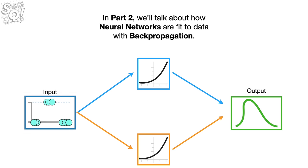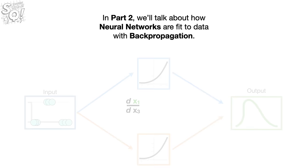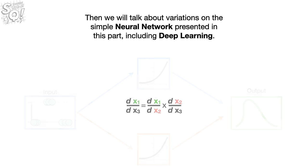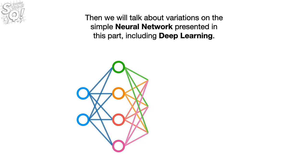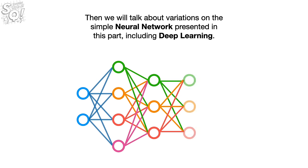In Part 2, we'll talk about how neural networks are fit to data with backpropagation. Then, we will talk about variations on the simple neural network presented in this part, including deep learning.